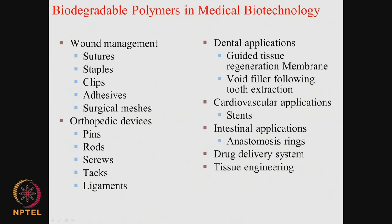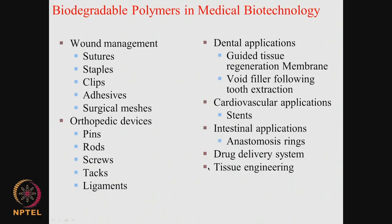In intestinal applications, anastomosis rings and drug delivery systems are used. Once the drug has been delivered to the targeted site, we want the polymeric material to completely degrade and disappear. In tissue engineering, scaffolds are used for tissue to grow. Once the tissue has grown and occupied the void, the scaffold material should completely disappear. In all these areas, we would like the material to completely degrade or get completely resorbed.